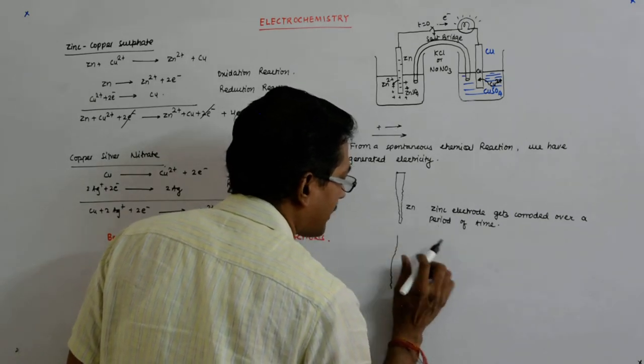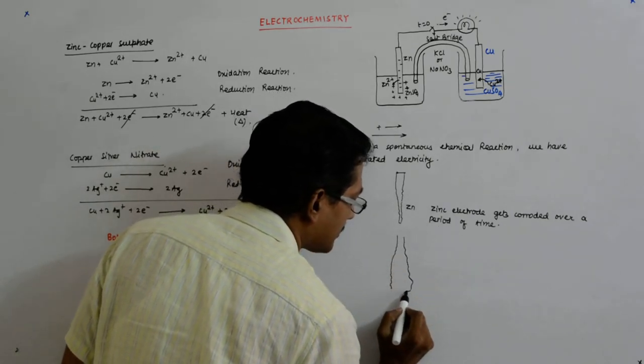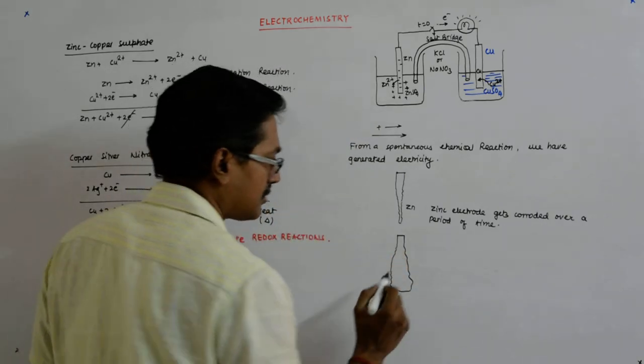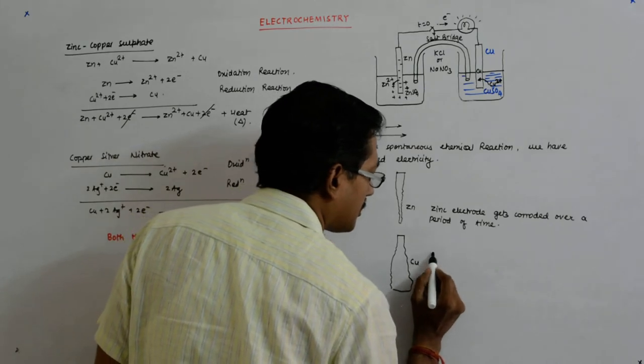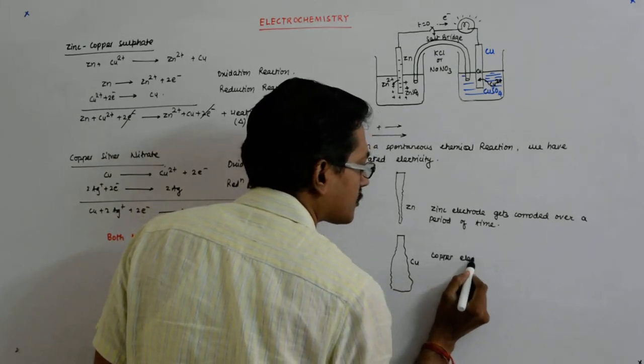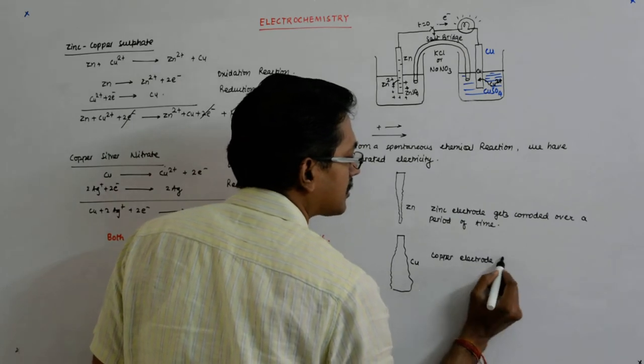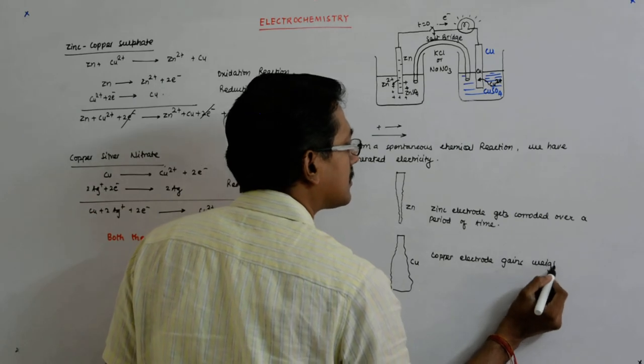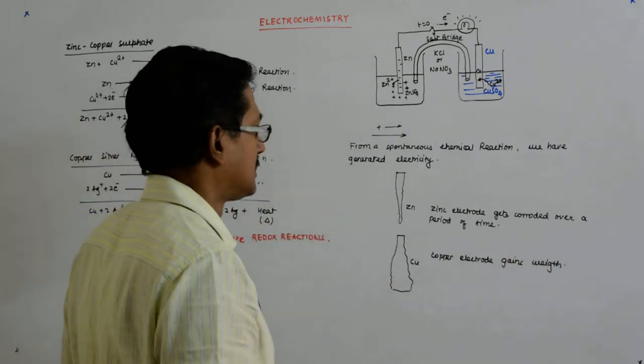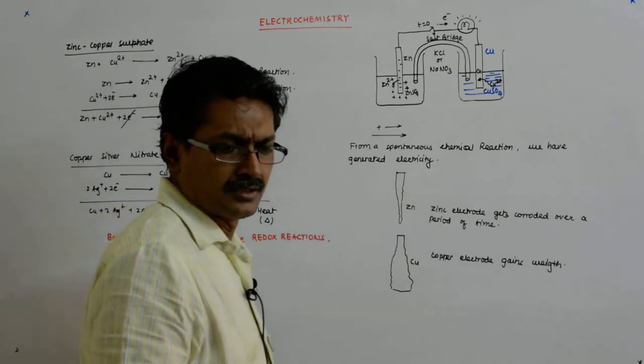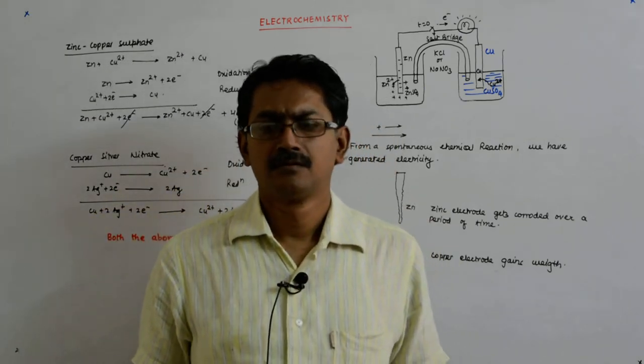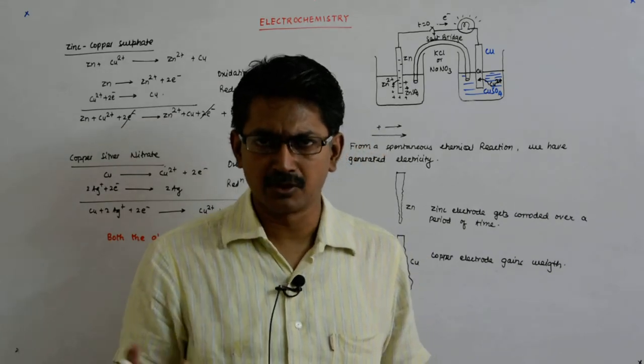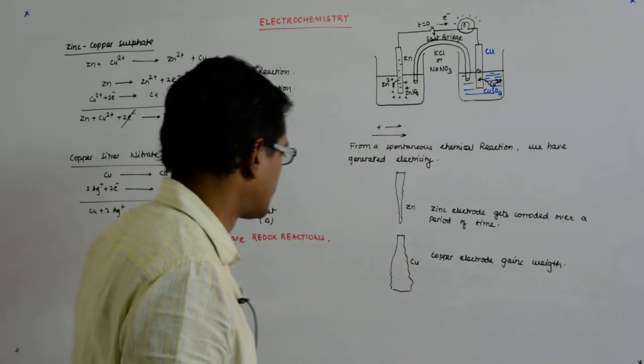You will find that the copper electrode gains weight. This is how they look after some amount of time. It is visible to the naked eye—yes, very visible to the naked eye. So this is not an exaggeration; this is what it will look like after some time.